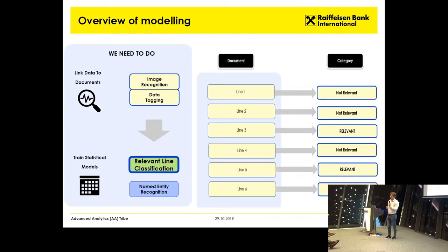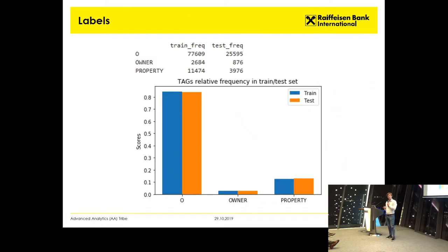What do I mean by relevant line classification? We have documents, we split them into lines, and we know which lines contain relevant information — basically information about either property or about the owner. In this part, we are trying to predict using supervised learning whether a line is relevant or not. As I mentioned, the data is very imbalanced. On this graph, you can see that most of the data is labeled as 'other', meaning it's not relevant. The second part is information about the owner or the property. What we try to achieve here is to reduce the amount of irrelevant lines and provide only the relevant lines into the named entity recognition model, with the assumption that the model will perform better with less unnecessary information.